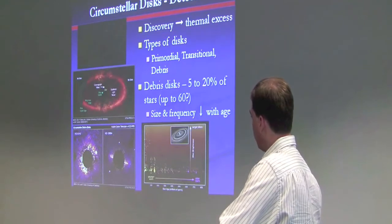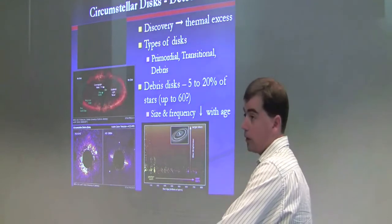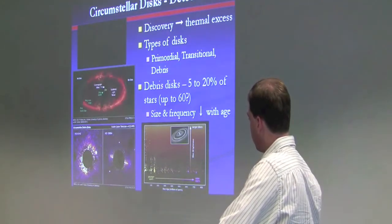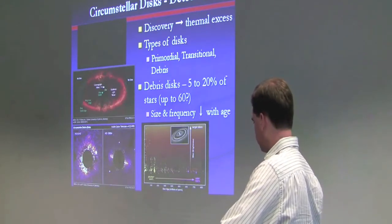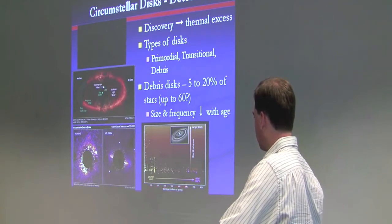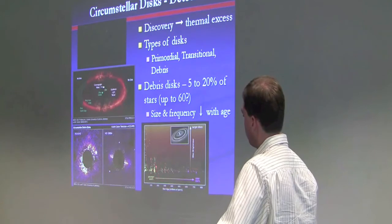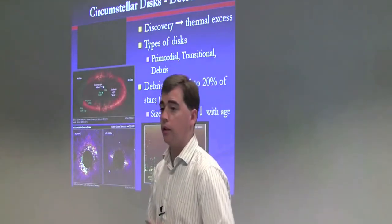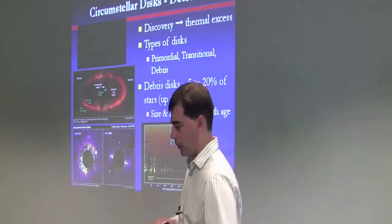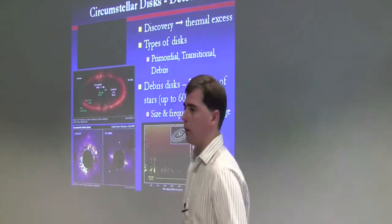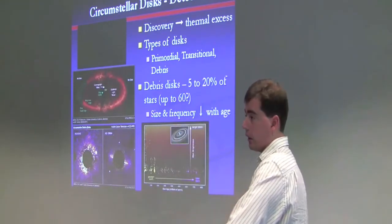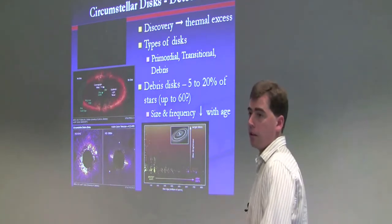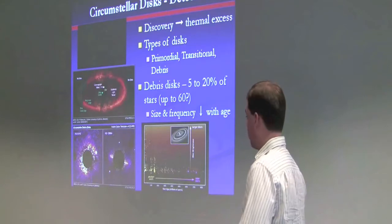They're called debris disks because it's thought that that dust comes from collisions of secondary bodies that formed asteroids, later on, after the primordial disk itself has gone away. Debris disks are found around 5 to 20 percent of stars. These are main sequence stars, so certainly older than those that support primordial disks. It's been noticed that both the size and frequency of these debris disks decrease with age in the star. This shows 100 million years, 200, 300, 400, 500, 600, 700. There are plentiful debris disks around young stars and relatively large, and they become less common and smaller as you get older.